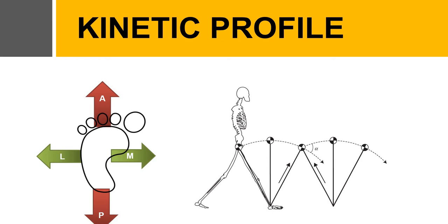The medial-lateral forces: in a healthy adult, these can be associated with pronation and supination. We initially supinate when the foot contacts the ground, then generally pronate through the rest of stance. The medial-lateral forces are the most variable between individuals. But as we age, the medial-lateral forces become more involved in balance and maintaining stability through the gait cycle.